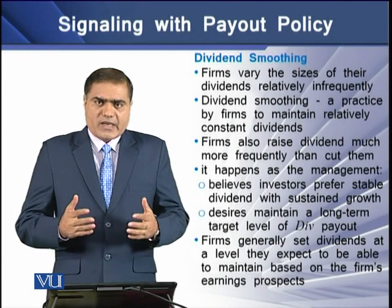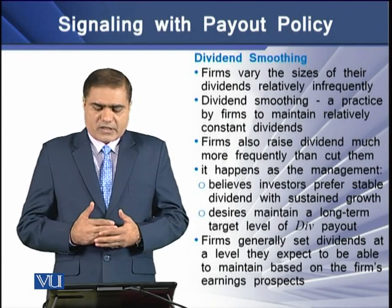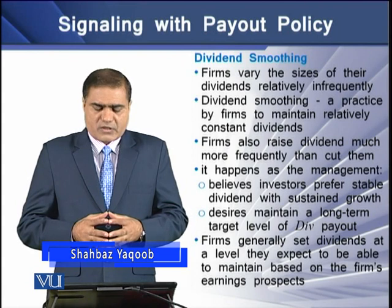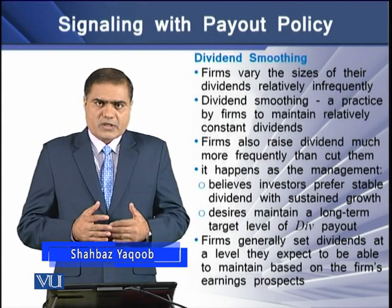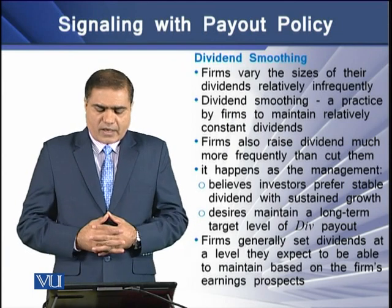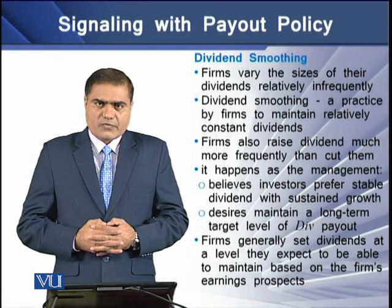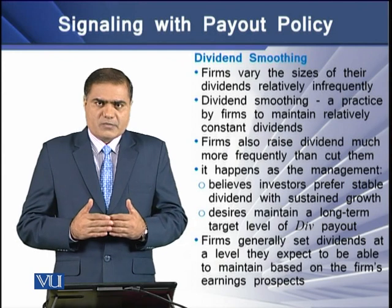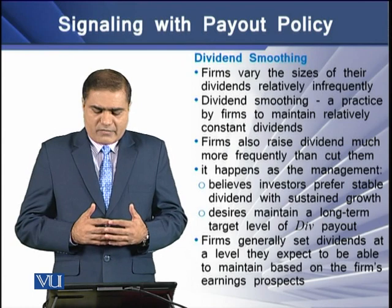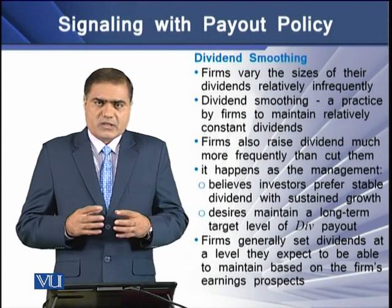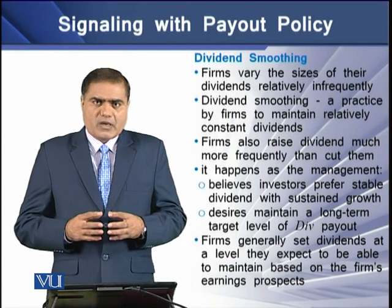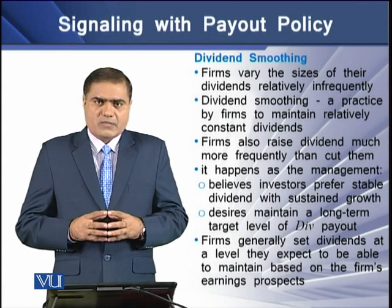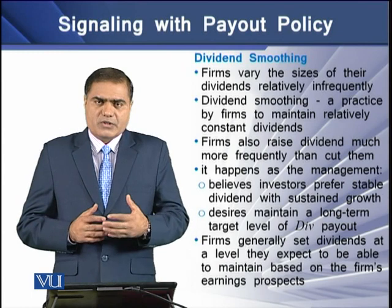Generally, firms vary the sizes of their dividends relatively infrequently. Dividend smoothing is a practice by the firm in order to maintain relatively constant dividends across a certain period of time. Firms also try to raise dividends much more frequently than they cut them, because management believes that investors prefer stable dividends with a sustainable growth rate.